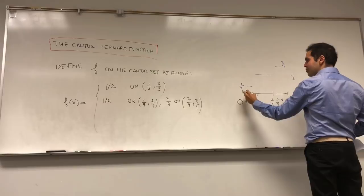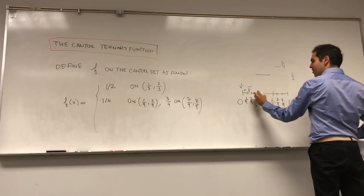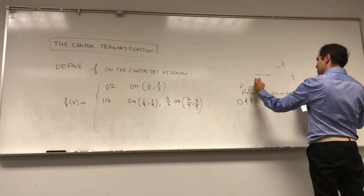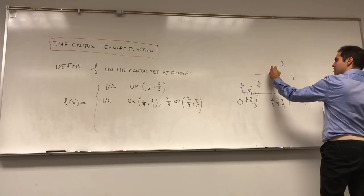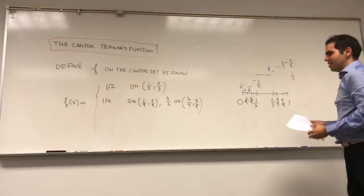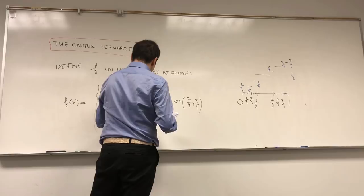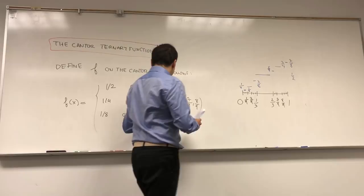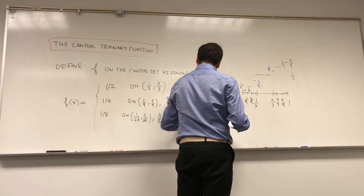You can just continue. For the interval [0, 1/9], split it up and define your function to be 1/8. For [2/9, 1/3], define it to be 3/8. For [2/3, 7/9], split and define it to be 5/8. And finally, for [8/9, 1], split and define it to be 7/8. So it's 1/8 on [1/27, 2/27], then 3/8 on the next interval, then 5/8, then 7/8.